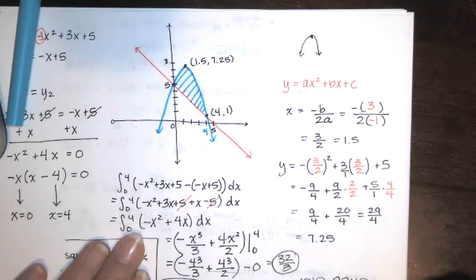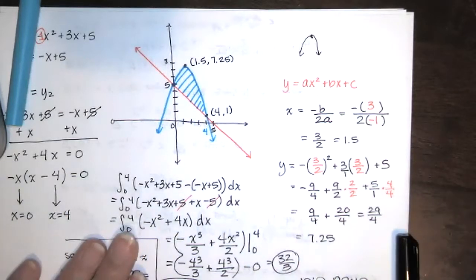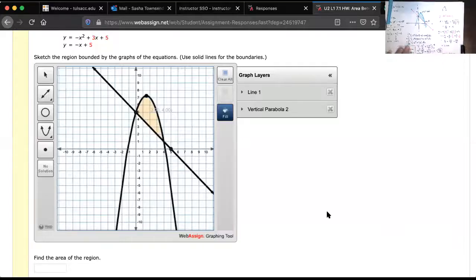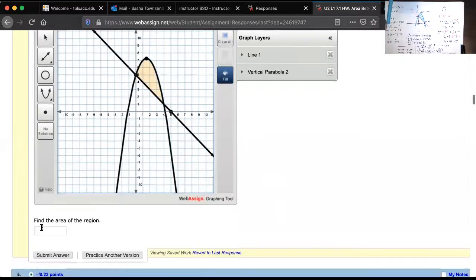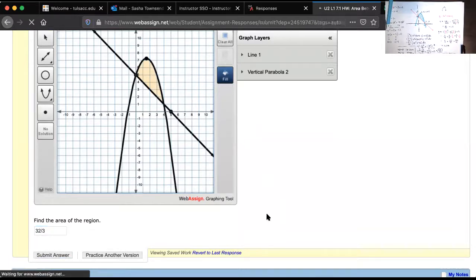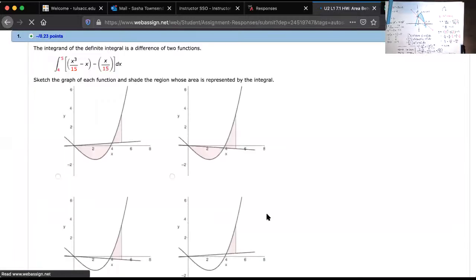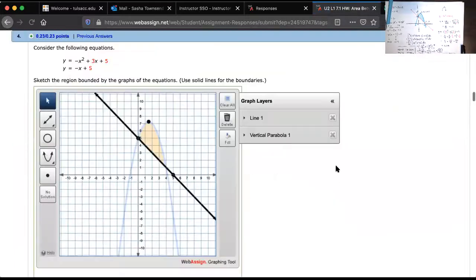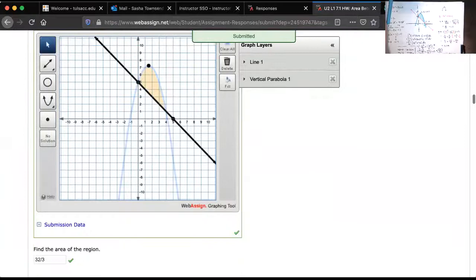So, we're going to go back to our screen and see if WebAssign likes these answers. Answer is 32 divided by 3. Submit answer. Did it like it? It sure did.